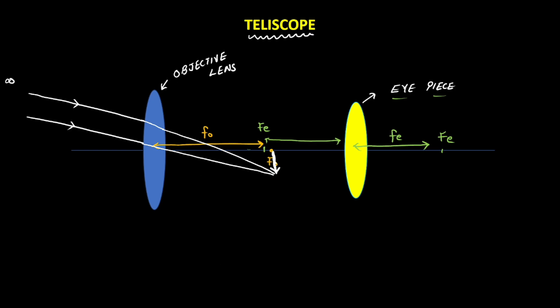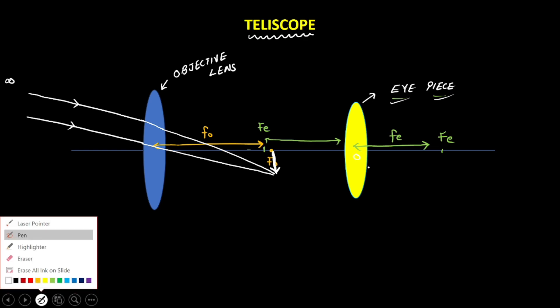Now, all we need to do is magnify this image. For that, we use a convex lens called the eyepiece. We make sure that this image, which acts as an object for the eyepiece, is within the focal range — that is, between the focus and the optical center. Thus, the image created would be magnified. So let us see the ray diagram for that.